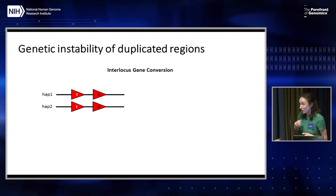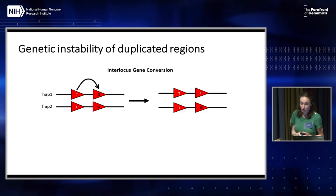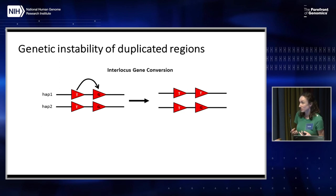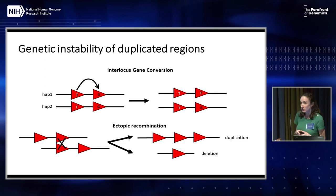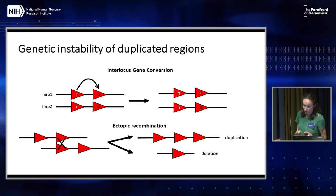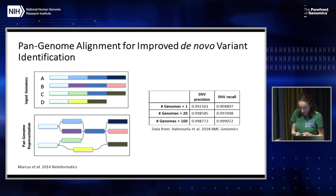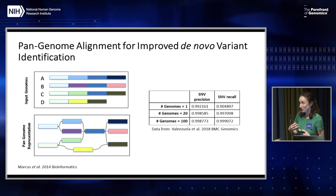These challenges are made even more acute when we consider that interlocus gene conversion between homologous duplicated sequences can transfer variants that arise in one duplicon onto the backbone of another, such that the genetic identity of these duplicated sequences is quite fluid. Furthermore, ectopic recombination between misaligned duplicates can give rise to deletions and duplications, and these happen quite frequently in genomes. These are very dynamic genomic regions that present many issues for short-read mapping; linked reads or long-read methods may help skirt around some of these issues.